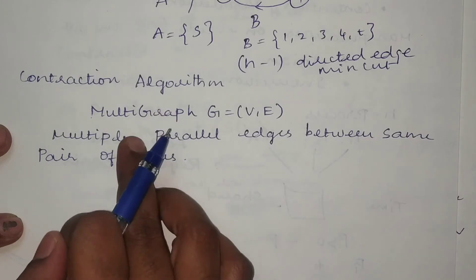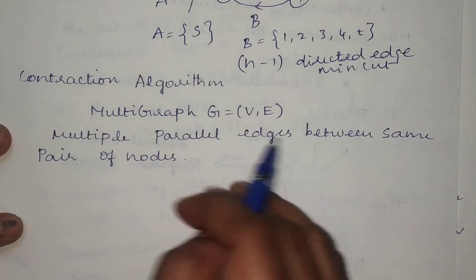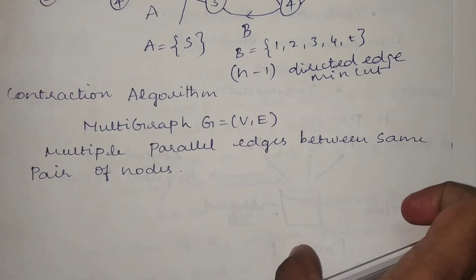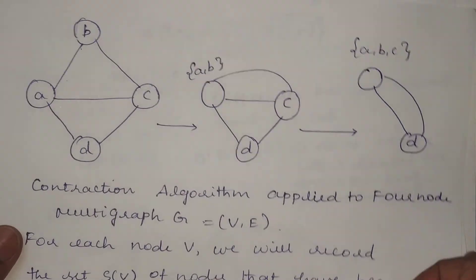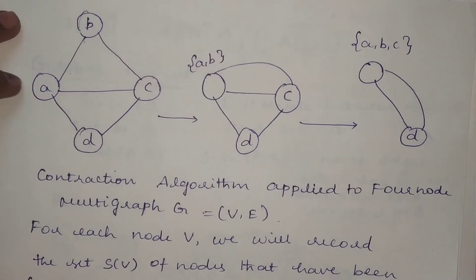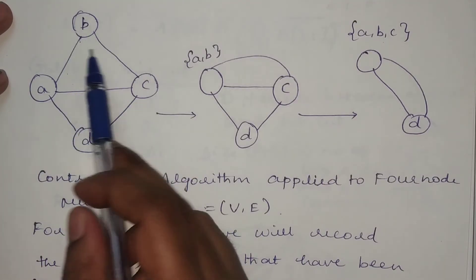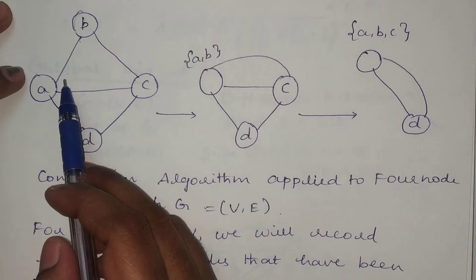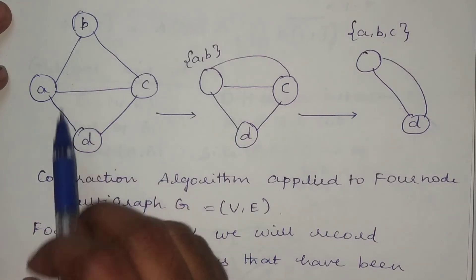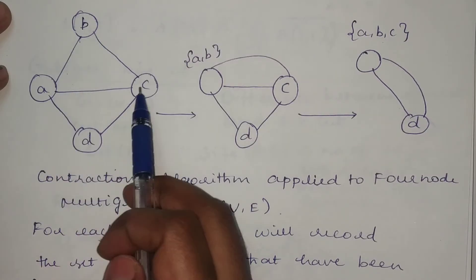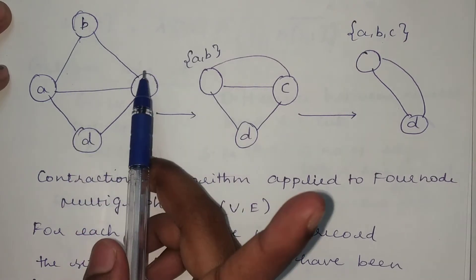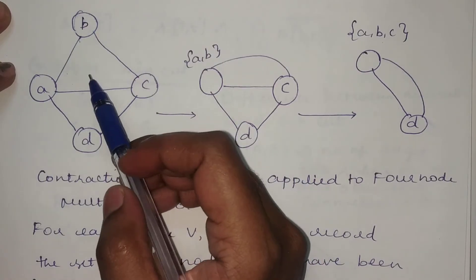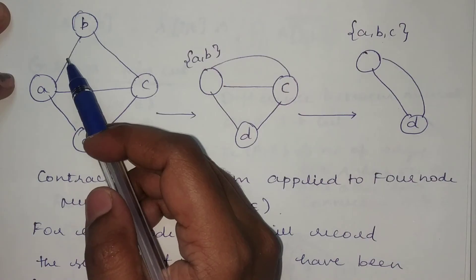The contraction algorithm can solve the global min-cut problem using randomization. The input is a multigraph G = (V, E) with possibly multiple parallel edges between the same pair of nodes. Here is an example: we have a multigraph with four nodes a, b, c, d, and we will now perform the contraction algorithm on it.